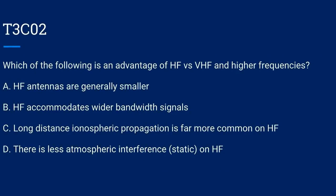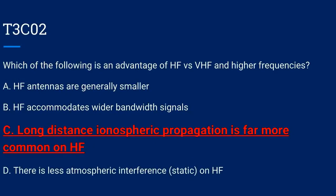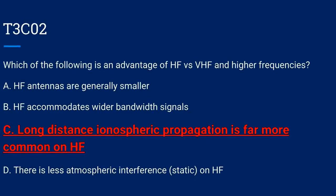T3C02. Which of the following is an advantage of HF versus VHF and higher frequencies? A. HF antennas are generally smaller. B. HF accommodates wider bandwidth signals. C. Long distance ionospheric propagation is far more common on HF. Or D. There is less atmospheric interference or static on HF. The correct answer is C: long distance ionospheric propagation is far more common on HF.